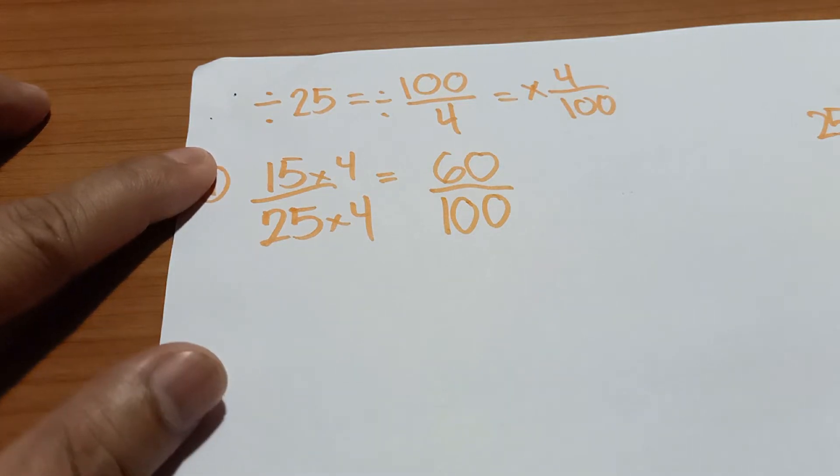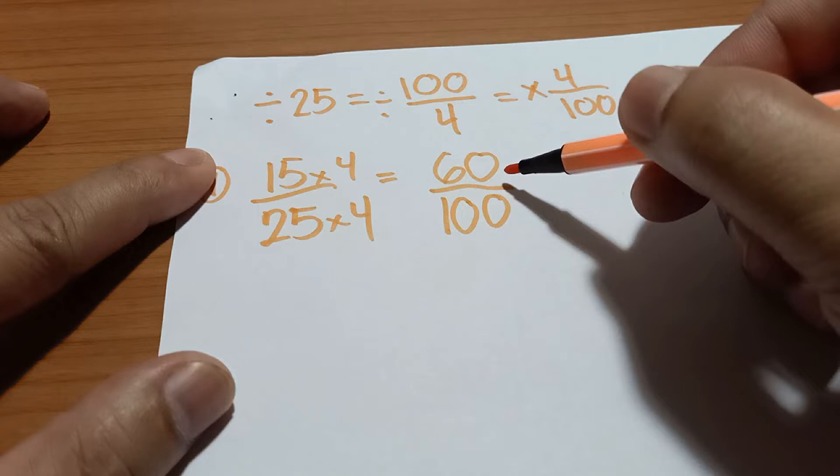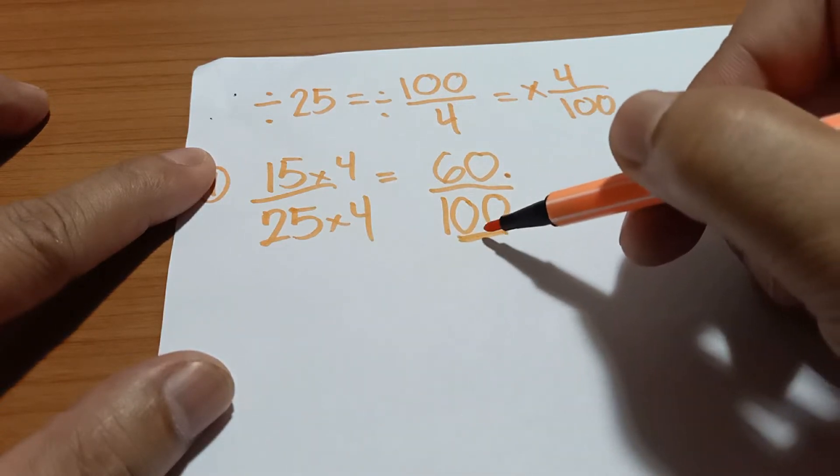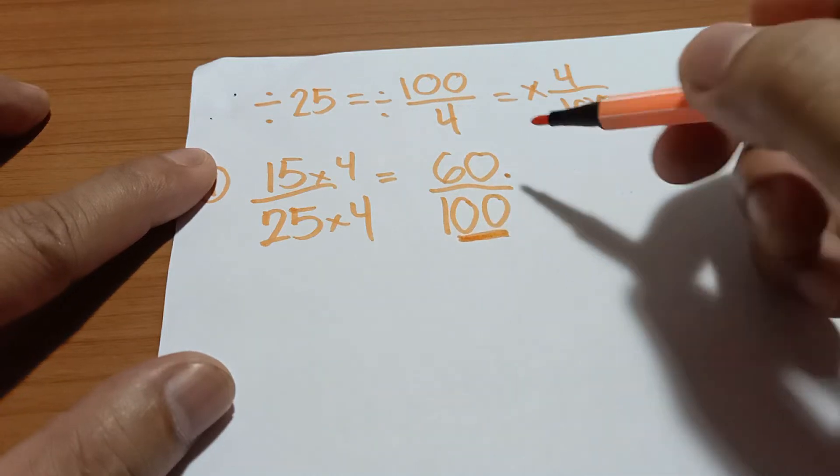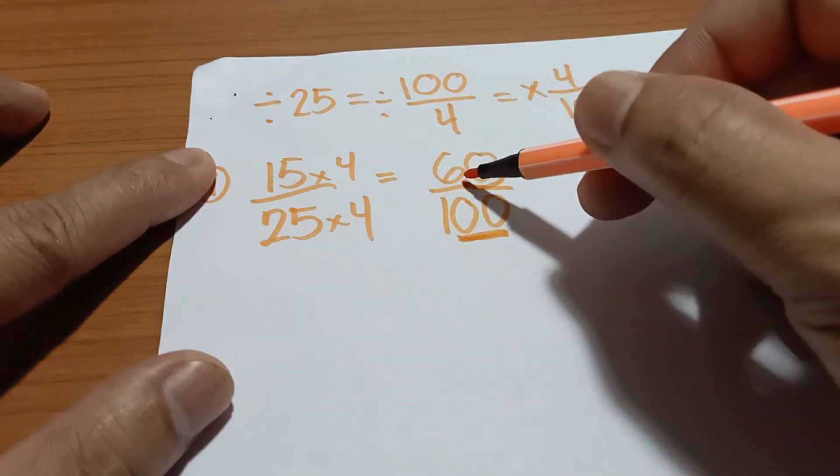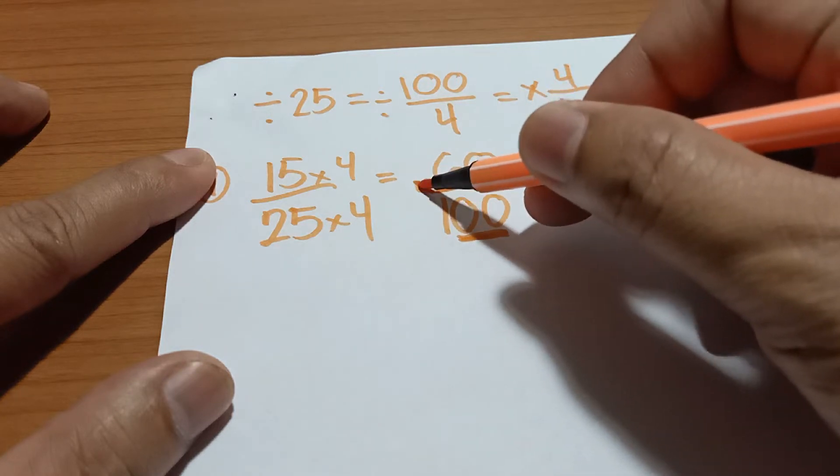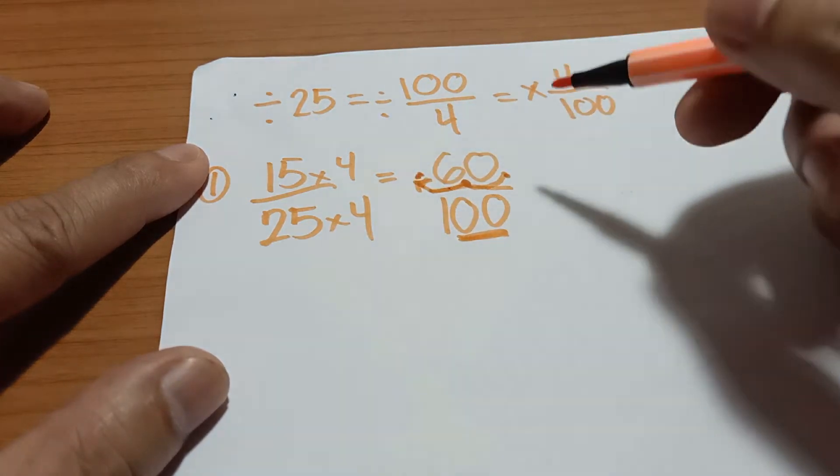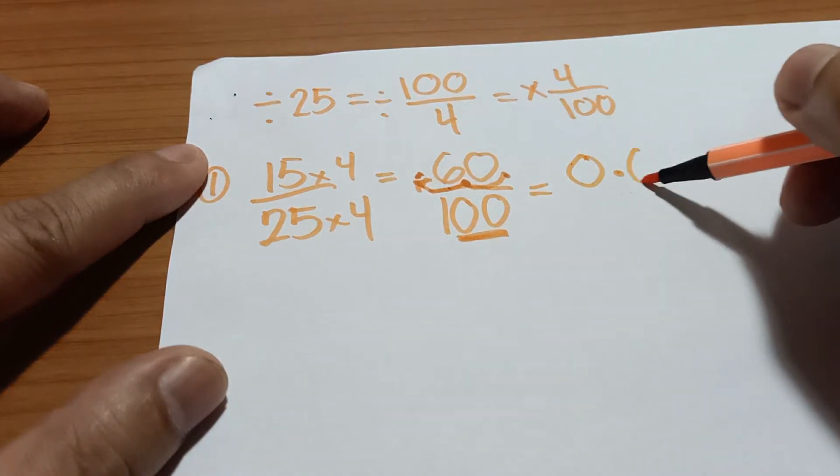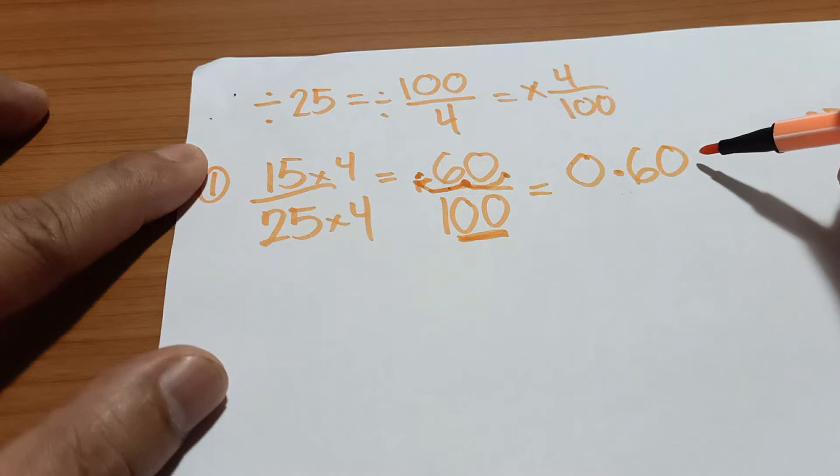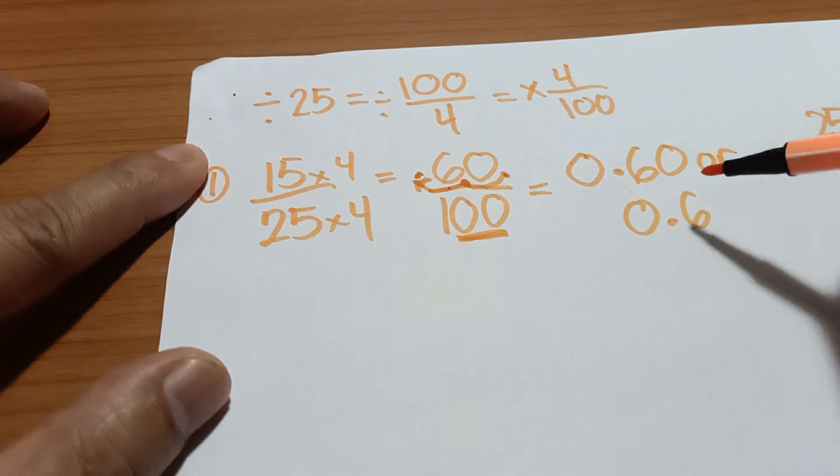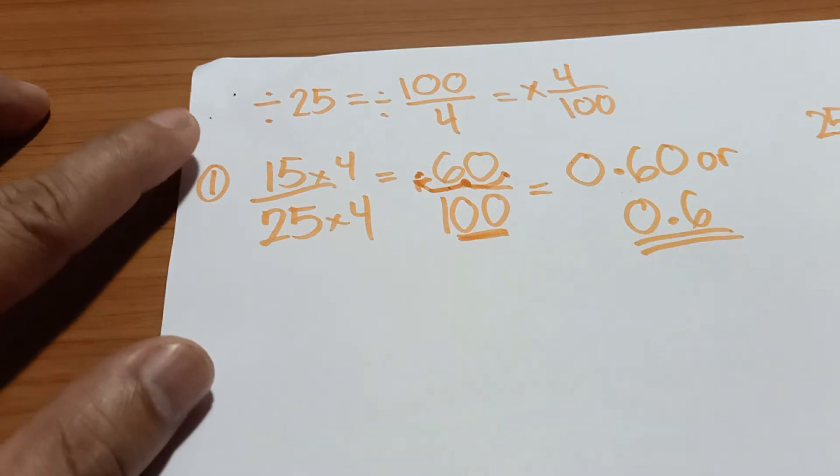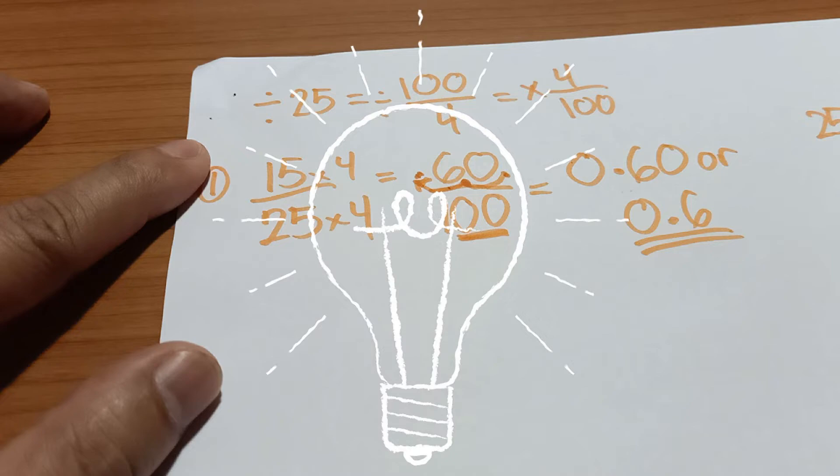So we all know that for whole numbers, the decimal point is on the right side of the last digit. Since you have 2 zeros in your denominator, you just simply move the decimal point twice going to the left. So the decimal point will move here, and the answer will be 0.60 or 0.6. So it's more easy compared to traditional division.